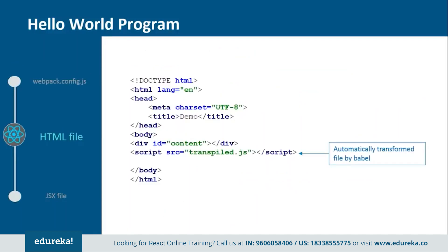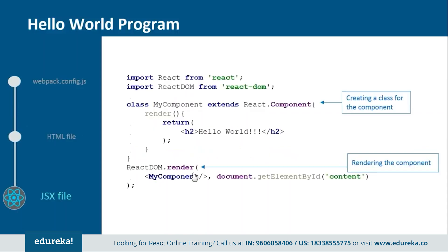Next we have the HTML file. This is a basic HTML file where we just need to add one div tag and one script tag. Inside the div tag we provide an id so that later we can refer to it from the JSX file. The script tag references the transpiled file that will be created by Babel. Next we have the JSX file. In this you import React and React DOM from their respective directories, then create a component called MyComponent which extends React.Component, because in React everything is a component. Inside this we create a render function to return the HTML representation, and at the end we render MyComponent over the div tag using its id, which is 'content'.